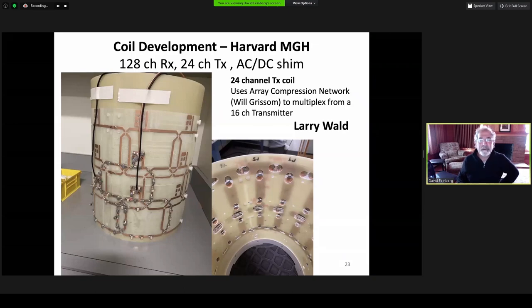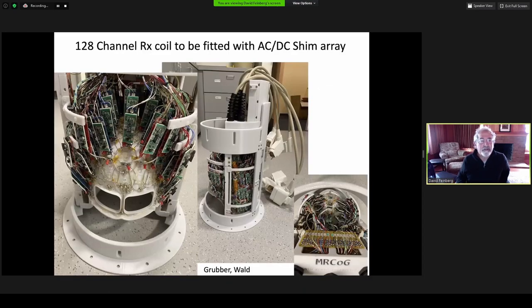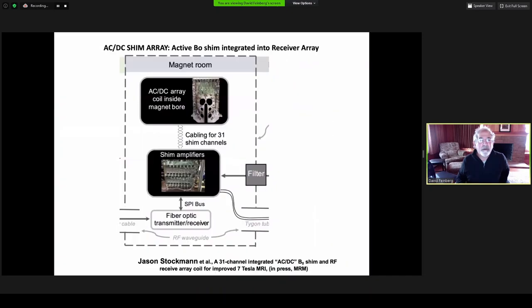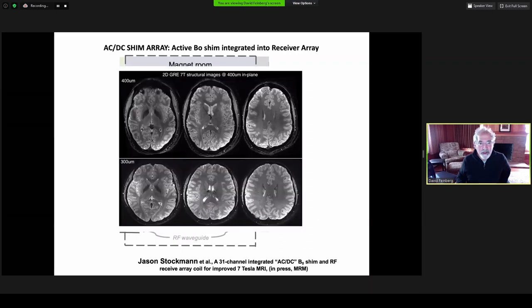The Harvard Group is building a more ambitious 128-channel array, and the transmit system is a 24-channel using an array compression network invented and proposed by Will Grissom that multiplexes the 16-channel transmit. The 128-channel receiver array has already been built and bench-tested, not yet used on the scanner. It will be tested and used for imaging before the AC/DC shim array is integrated into it, which initial testing on 64-channel array at 7T has been performed and gave very good homogeneity and good shimming.